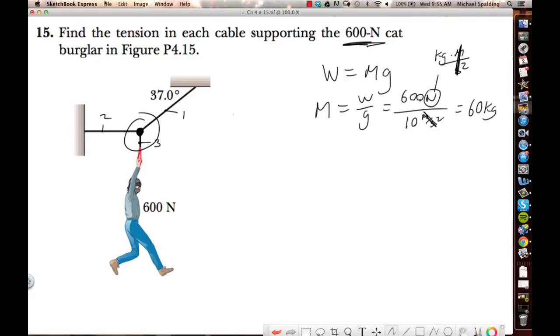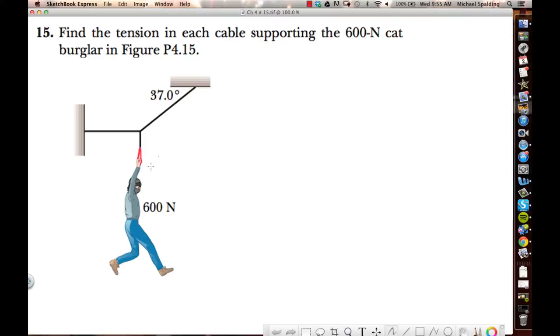But we're going to be using his weight. So let's solve the problem. We're going to call this rope 1, this will be rope 2, this will be rope 3. We're finding the tension in each rope. First thing you do is a free body diagram for this point right here, because that's where the three ropes come together.